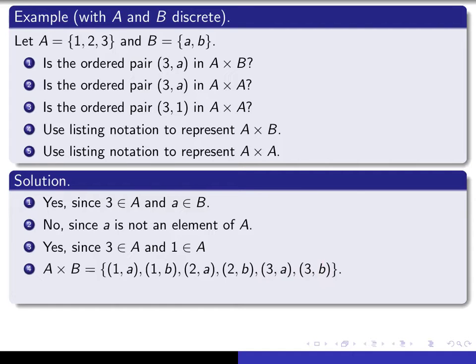And what about if you use listing notation to represent A × A? That's going to have more ordered pairs. There will be 9 such ordered pairs. And the Cartesian product is given as follows.